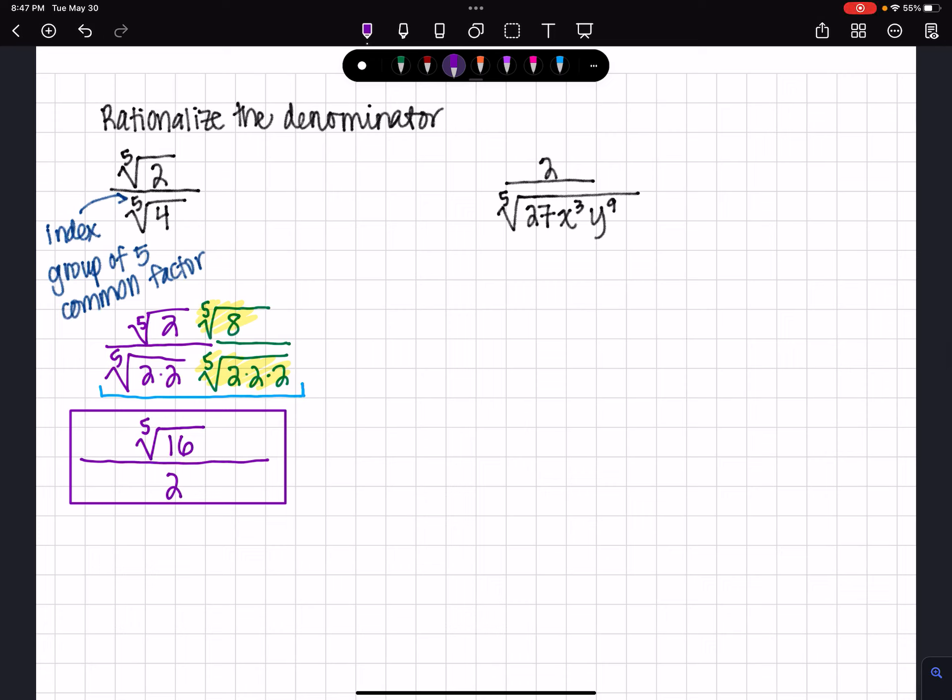Okay, now we have this problem on the right: 2 over the 5th root of 27x cubed y to the 9th, and we need to rationalize that denominator. We're going to do the same thing.